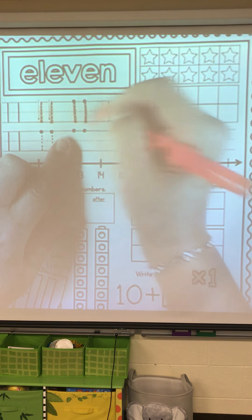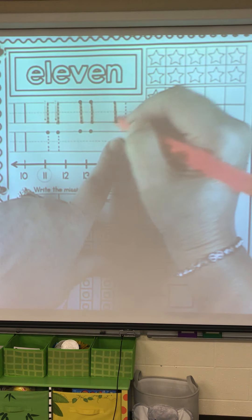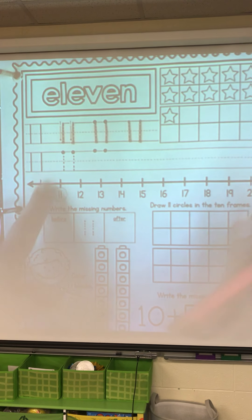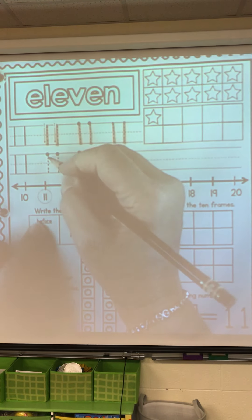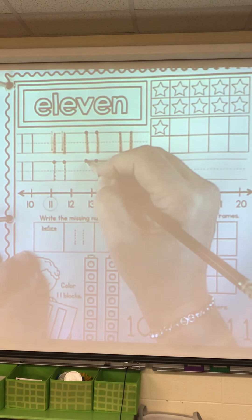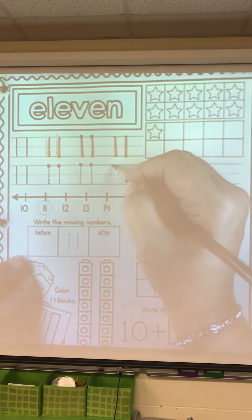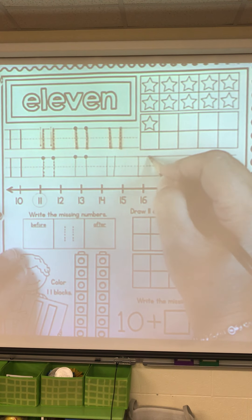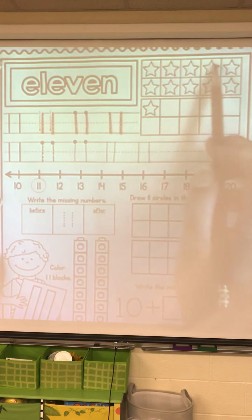11, 1, 1 makes 11. Trace the next 11. 1, 1 makes 11. Now grab your pencil. Trace the 11. 1, 1. What's our number? 11. 1, 1. What's our number? 11.